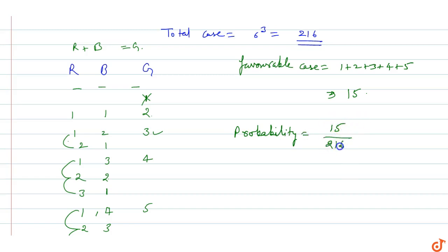Simplifying 15/216 to lowest form: dividing by 3 gives 5/72.